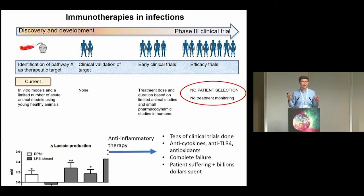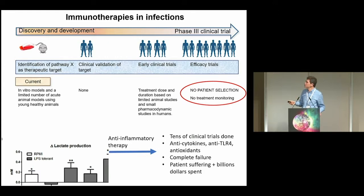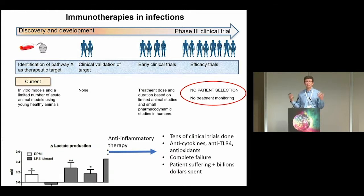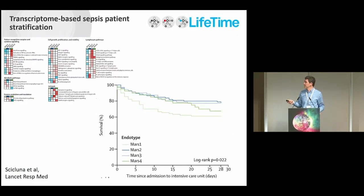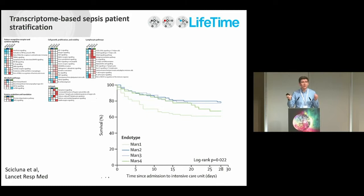What has always been done in terms of immunotherapy — for example for sepsis — is that it has been tried tens of times in the last 30 or 40 years: identify a pathway which is distorted in patients with sepsis, and then treat all patients with an immunomodulator. There were many trials done with anti-cytokines, TLR4 antagonists, antioxidants, and so on, which cost tens of billions of dollars and were all basically failures. What has become clear is that this approach will never be successful. We need proper stratification of patients with infections, just as we do for cancer.